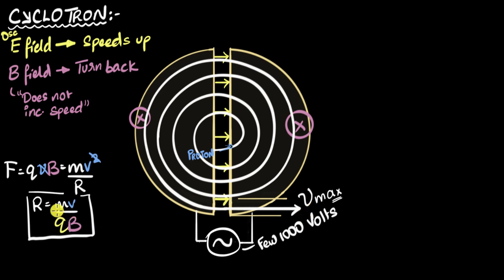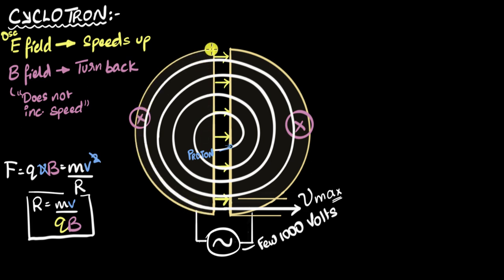I do have an equation that connects the speed of the particle and the radius of that particle. So if I could just know what is the radius of this proton when it has the maximum speed — that is this radius — then I can substitute into this equation, rearrange, and get the speed.